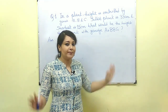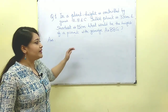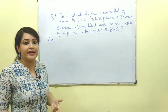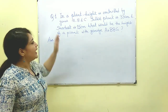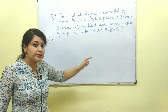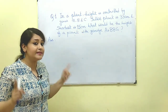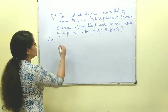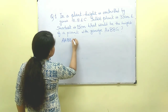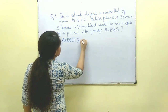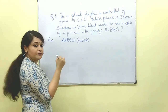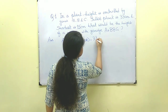How do we approach these kinds of questions? First we have to see what is the genotype of the tallest plant. Since height is controlled by capital A, capital B, and capital C, the tallest plant will have all dominant alleles. So the tallest plant is going to be AABBCC, and by the question the height of the tallest plant is 33 centimeters.